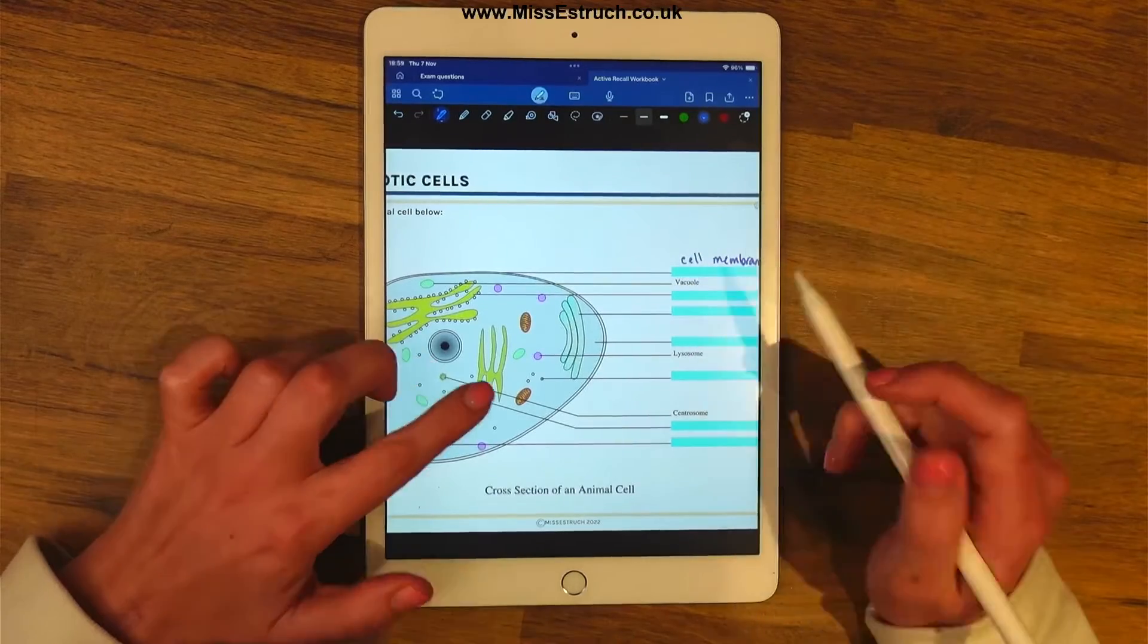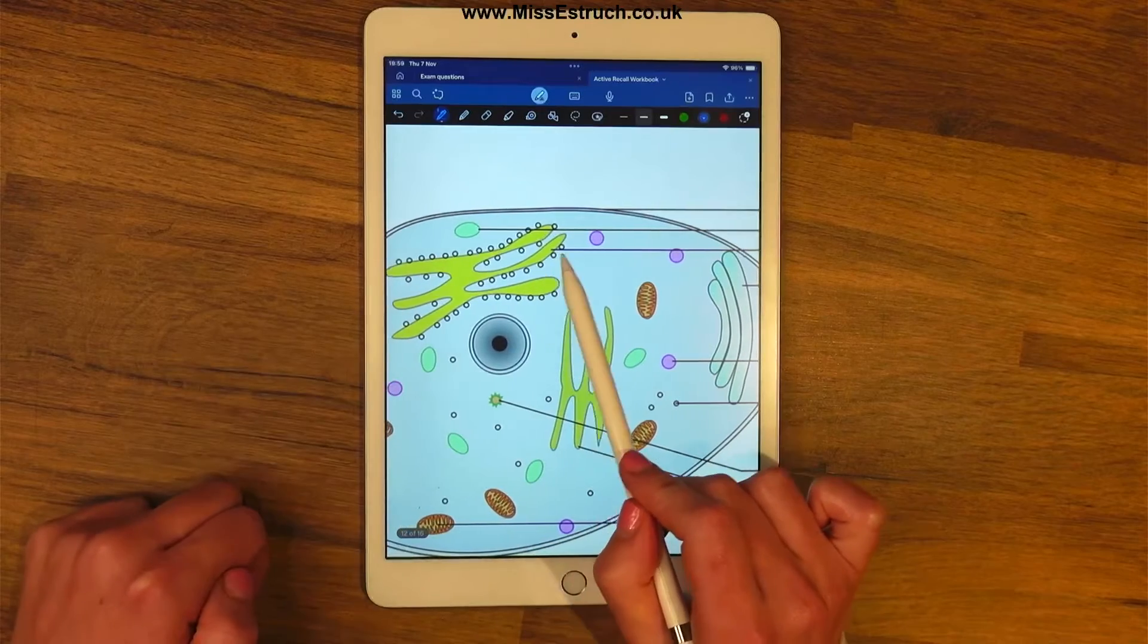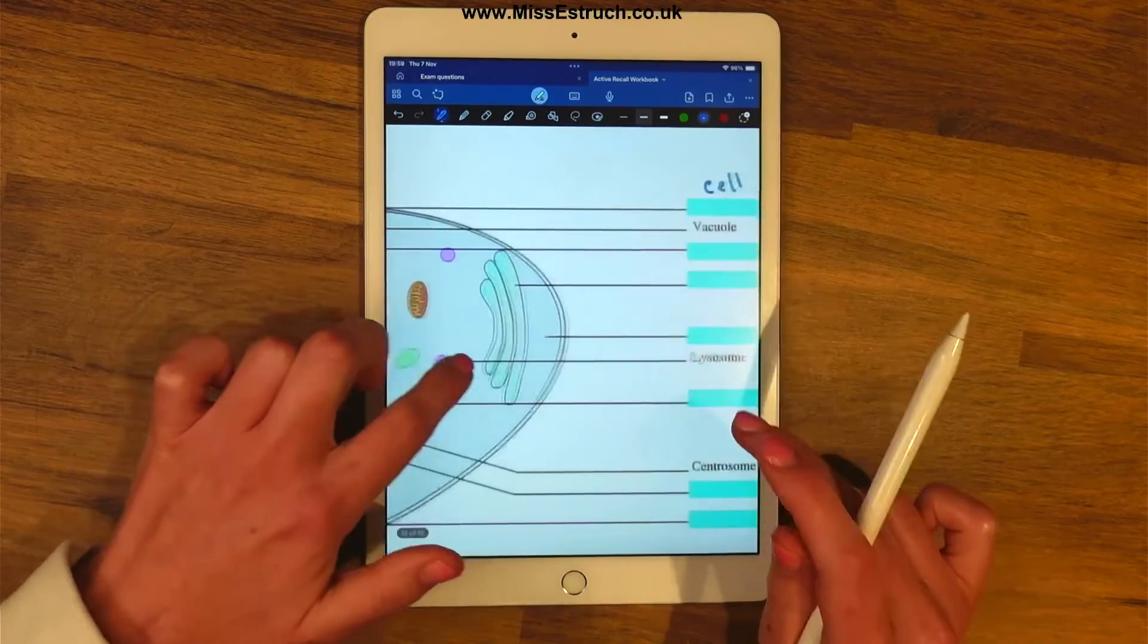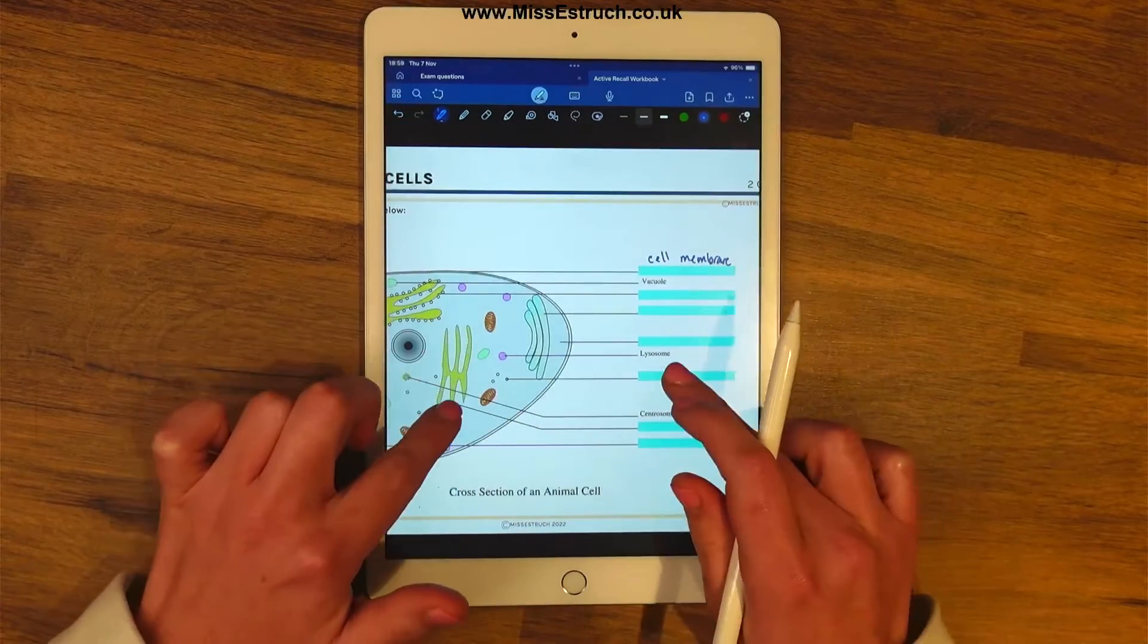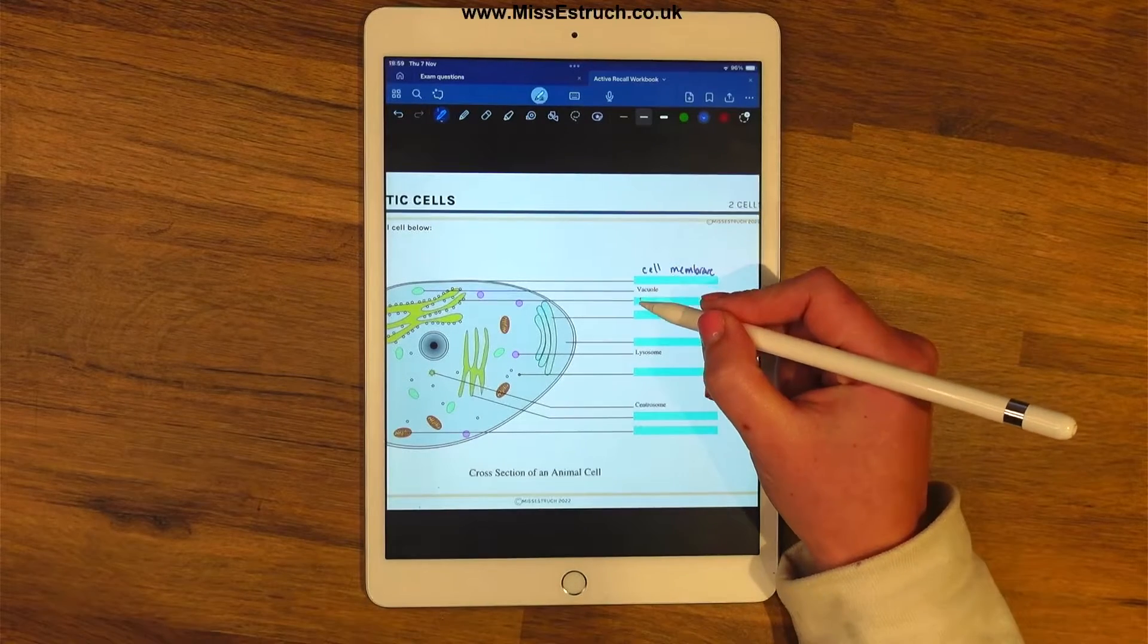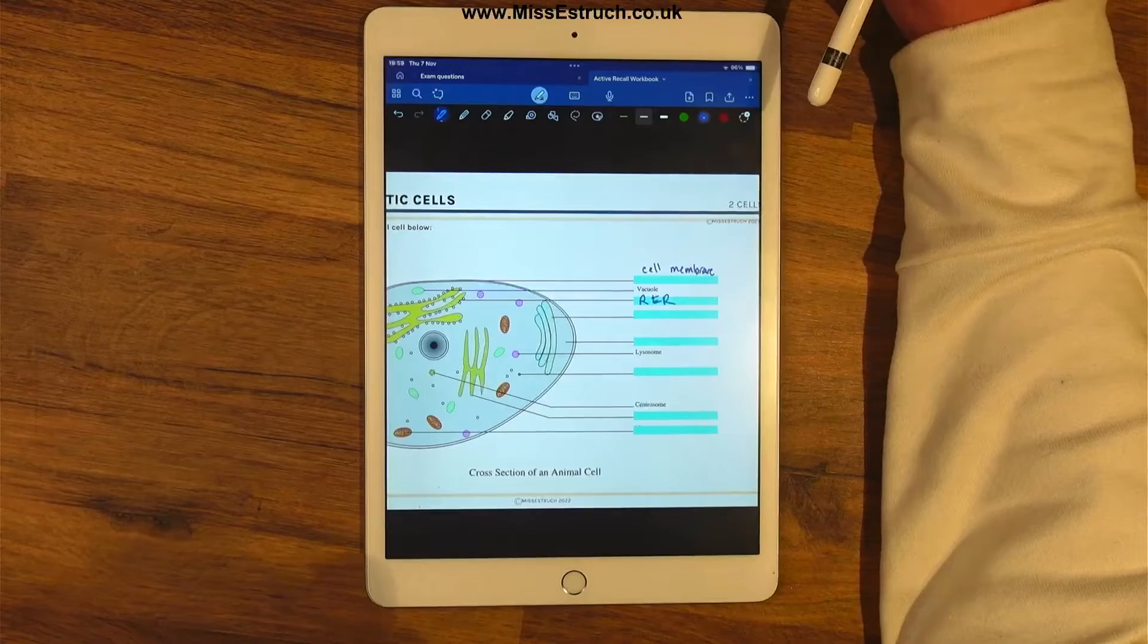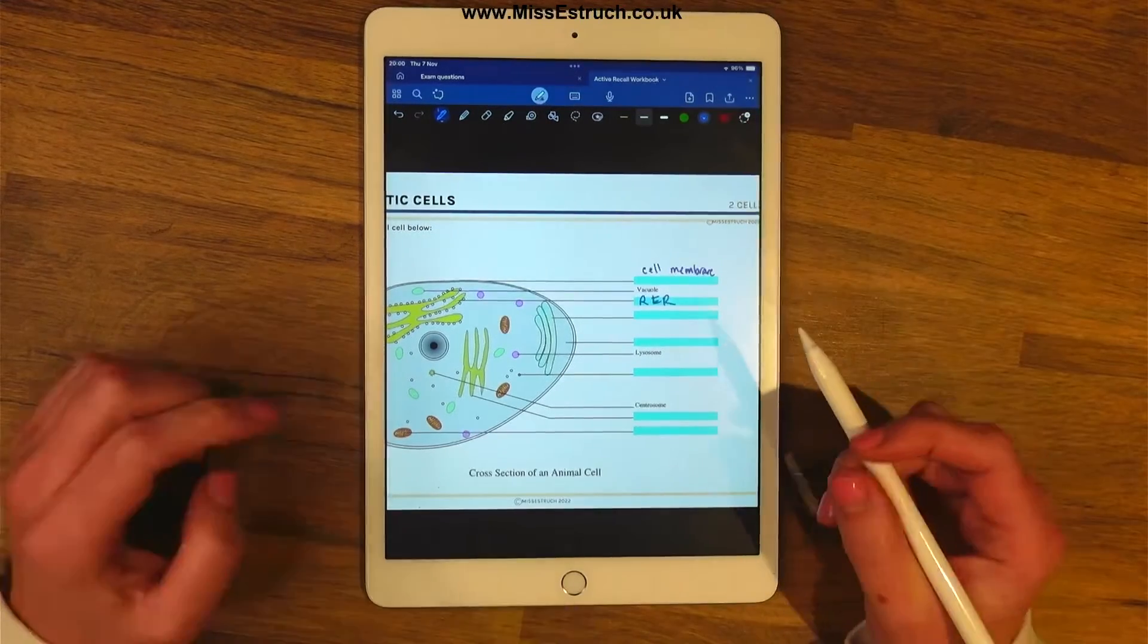Then we've got to label this structure here. We can see we've got what looks like folded membranes with circles on the outside. Those circles are ribosomes and the folded membranes make up our rough endoplasmic reticulum. I'm just going to write RER because I'm going for shorthand here.